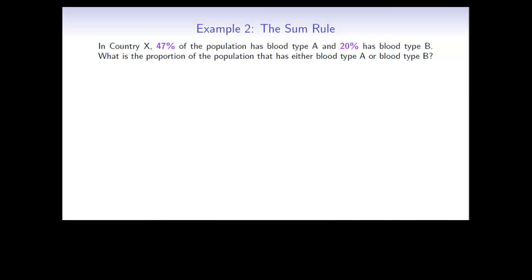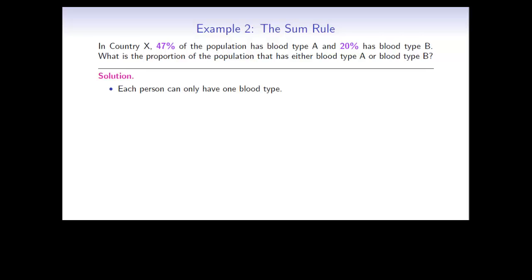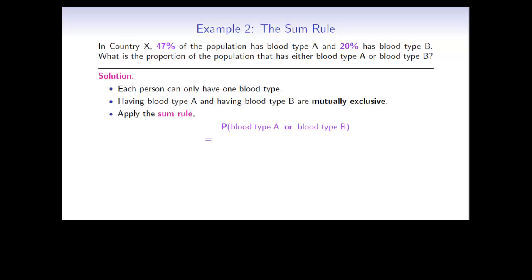Here's an example of the sum rule. Suppose that in country X, 47% of the population has blood type A and 20% has blood type B. What is the proportion of the total population that has either blood type A or blood type B? Well, each person can only have one blood type. This means that having blood type A and having blood type B are mutually exclusive events, so we can use the sum rule. The total probability is given by adding the two different probabilities: 47% plus 20% is 67%.